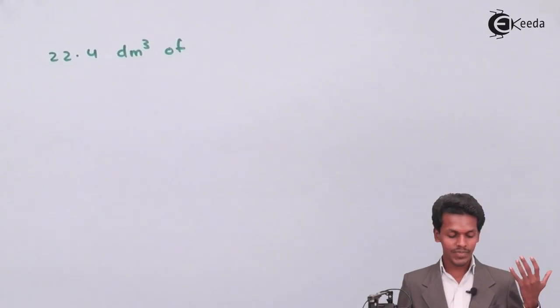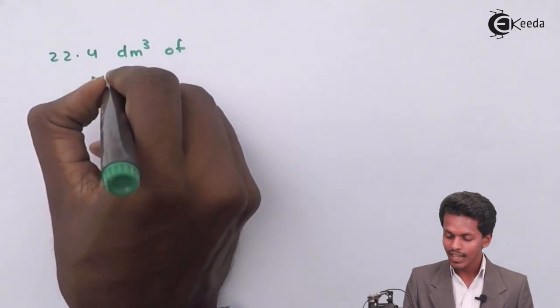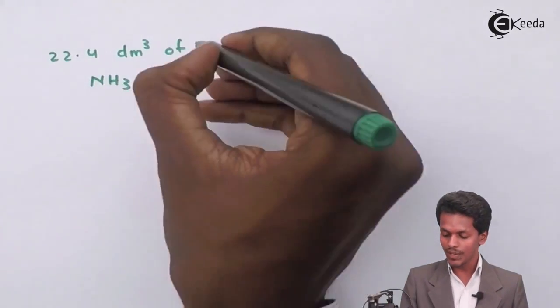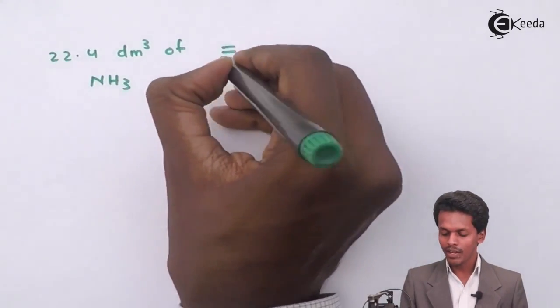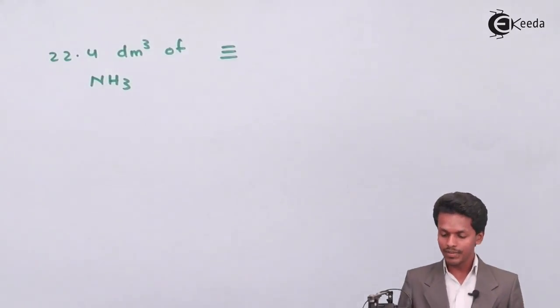The gas provided to us is ammonia, so 22.4 dm³ of ammonia, that is NH₃, will occupy one mole of the ammonia.